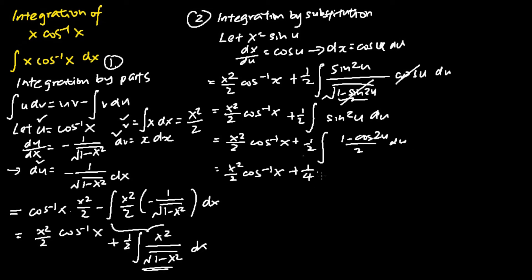And next, we will factorize the half out of the integral. We get one quarter the integral of 1 minus cosine 2u du.